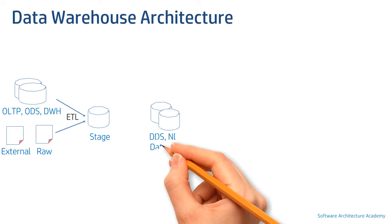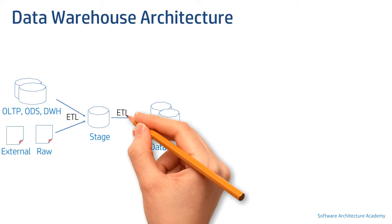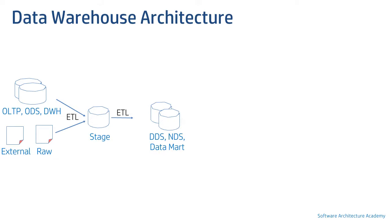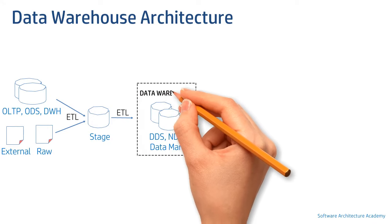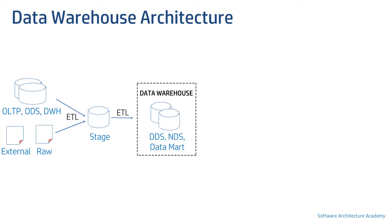ETL is used again, this time with transformations, to load data from stage into either a normalized data store, a dimensional data store, or a data mart. Most widely it's a dimensional data store. A dimensional data store is a result of dimensional modeling done using facts and dimensions, which is Kimball methodology. I will be covering this in detail in my data modeling series, so please subscribe to the channel to stay updated.